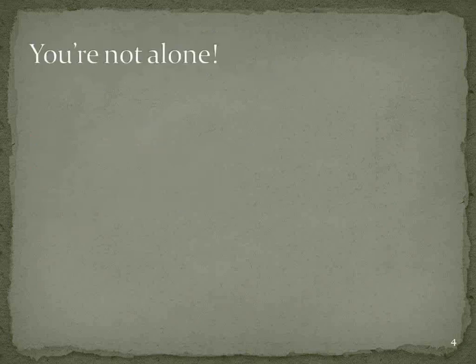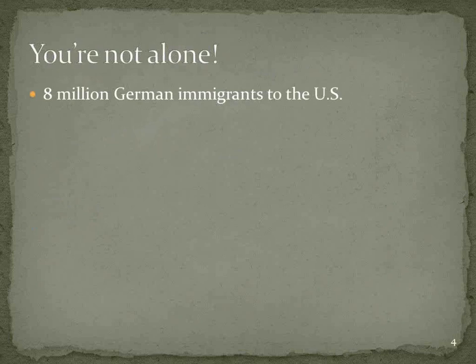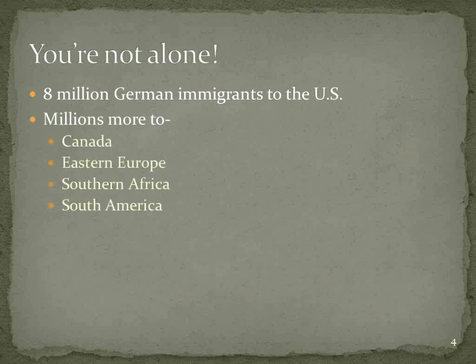The first thing to know is that you are not alone as a person with German ancestry. There were about 8 million German immigrants coming into the United States — people who spoke German. There are millions more who came into Canada, who moved to Eastern Europe, and later their ancestors came to other countries. Germans settled parts of Southern Africa, parts of South America. Eventually, wherever your German ancestor is from, it's going to wind its way back to one of the German states.